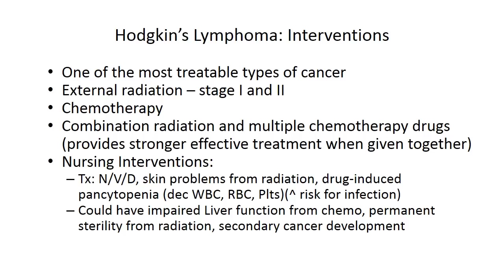Fortunately, Hodgkin's lymphoma is one of the most treatable types of cancer. A referenced friend underwent chemotherapy and radiation and is now cancer-free. External radiation can be done for stages I and II. Chemotherapy can also be used, and often combination radiation and multiple chemotherapy drugs are given together to achieve a synergistic effect — a stronger, more effective treatment when medications or treatments are combined.